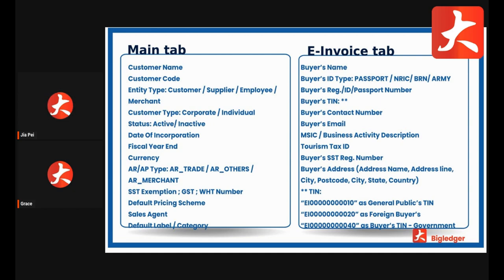That covers the summary of the main tab and the e-invoice tab. For the e-invoice tab, take note of the TIN number. If the customer does not provide a TIN number, you need to set it to 'EI000000000010' — that is nine zeros followed by '10'. The '10' suffix is for a general private TIN, used when the customer only provides an IC without a TIN, or for cash account customers that don't require e-invoice. For foreign buyers, use '20'; for government, use '40'.